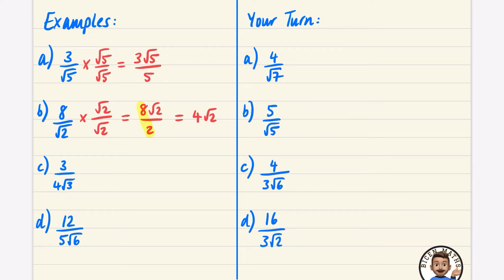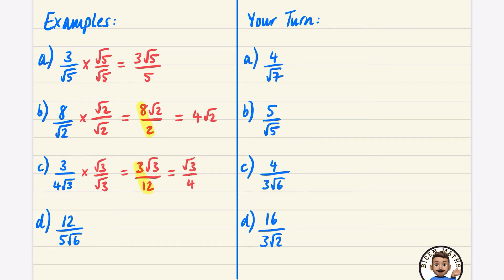For this fraction with root three in the denominator, multiply top and bottom by root three over root three. The numerator becomes three root three. The denominator is four times root three times root three — root three times root three is three — so it's three times four, which is twelve. The fraction part is three over twelve, which simplifies by dividing top and bottom by three to give one over four. So the answer is root three over four. You could also write this as a quarter root three.